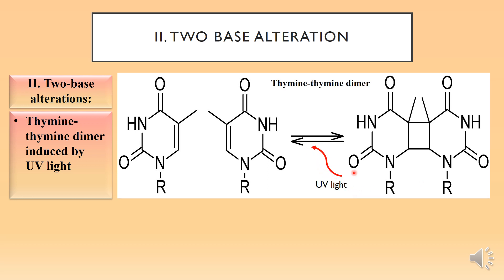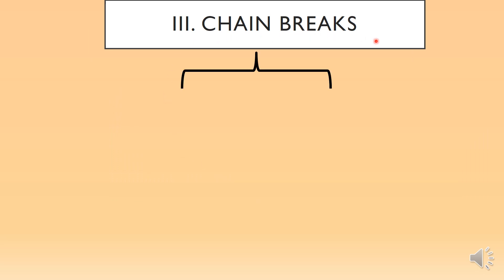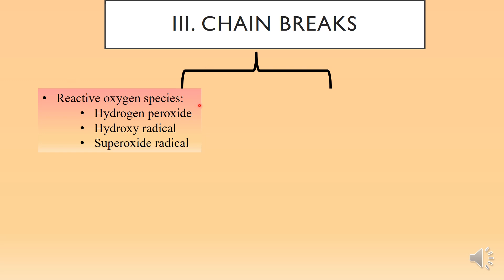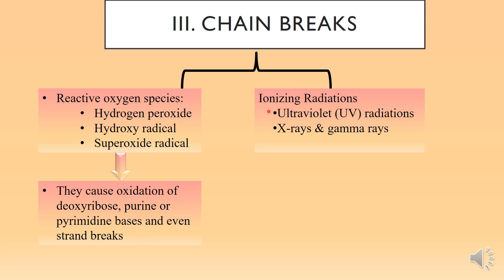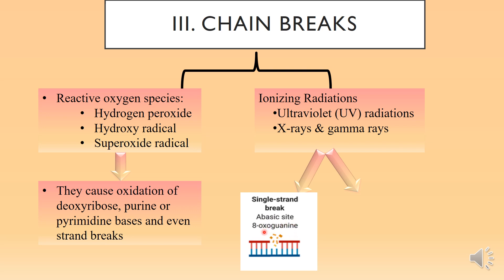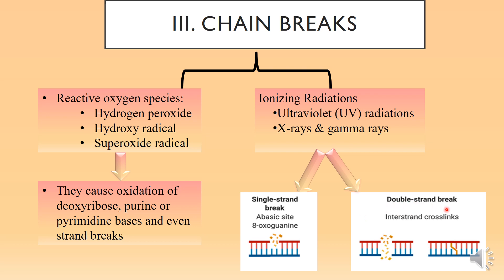The third kind is chain breaks. Chain breaks are caused by reactive oxygen species such as hydrogen peroxide, hydroxy radical, and superoxide radicals, which cause oxidation of deoxyribose, purine, or pyrimidine bases, and even strand breaks. The second reason for chain breaks is ionizing radiations — ultraviolet radiation, X-rays, and gamma rays — which cause single-strand breaks and introduce an abasic site, and may also cause double-stranded breaks with intra-strand and inter-strand cross linkages.